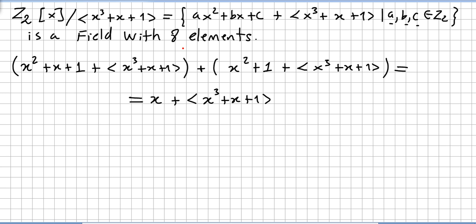It is easy to check this has eight elements since there are only two choices for each of a, b, and c in Z2. To show how calculations work inside this field: if you add (x² + x + 1) + (x³ + x + 1), the x² terms give 2x² which is zero in Z2, x remains, and 1 + 1 = 0, leaving just x as the result. You can do the same for multiplication and all other operations.